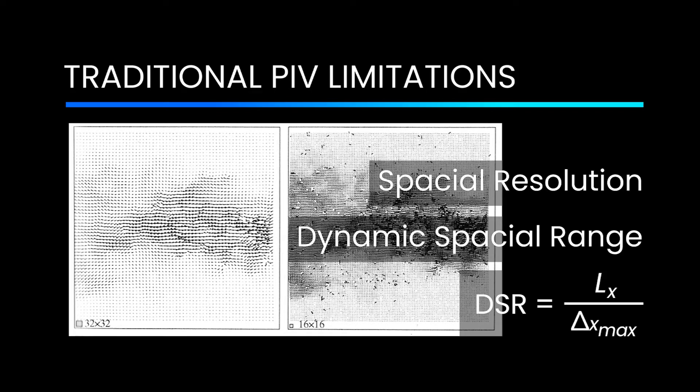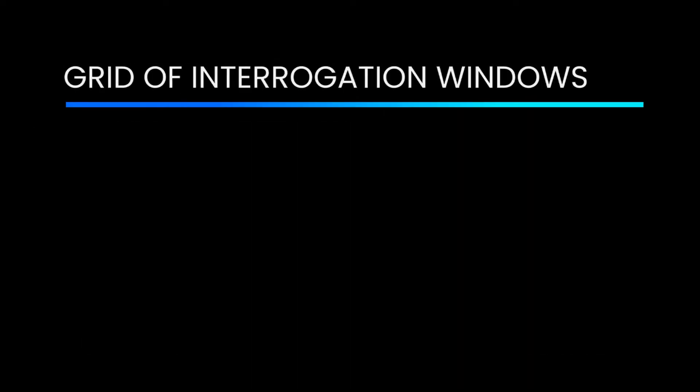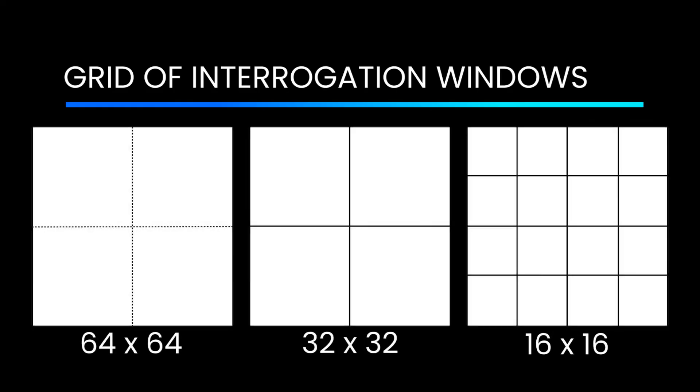Traditional PIV divides the images into a grid of interrogation windows with the local flow velocity for each interrogation window calculated using cross correlation between the two images.